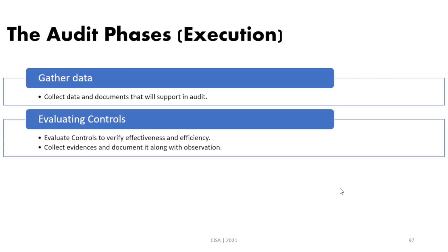In control evaluation, we evaluate controls for both effectiveness and efficiency. Effectiveness means the control is working as intended — it is doing the right job. Efficiency, on the other hand, means the control is working as intended and is also cost-effective. So efficiency is not only about effectiveness; it is also related to cost. While evaluating controls, we are collecting evidence along the way and recording our observations.